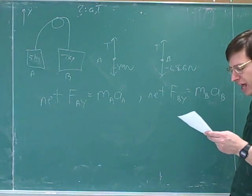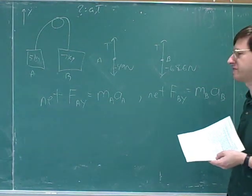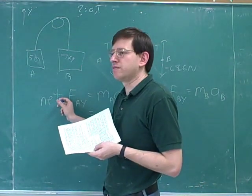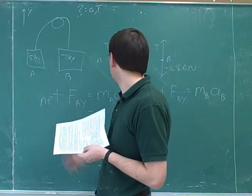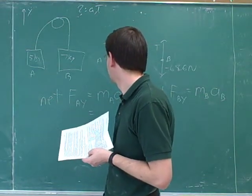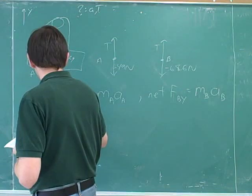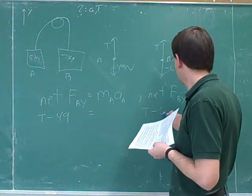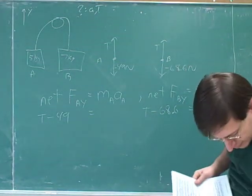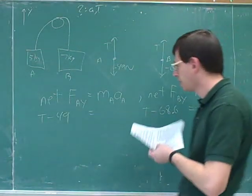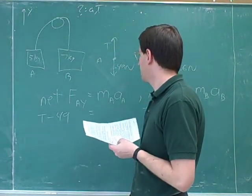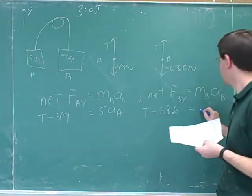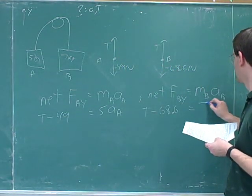Now step five is to add all the relevant forces on the left side of the equation. That means I should just start listing all of the y forces. What should I list here on the left hand side? T minus 49. That's right. And over here I should list T minus 68.6. And what should I put in the right hand side of this equation? 5a. And on the right hand side of this equation? 7a.